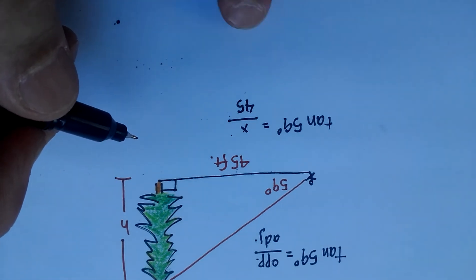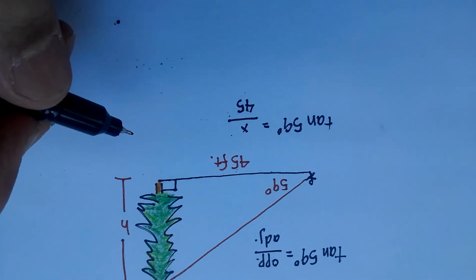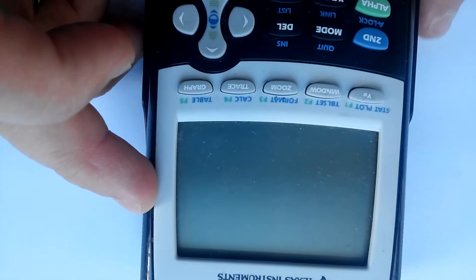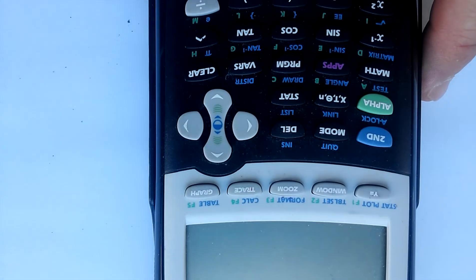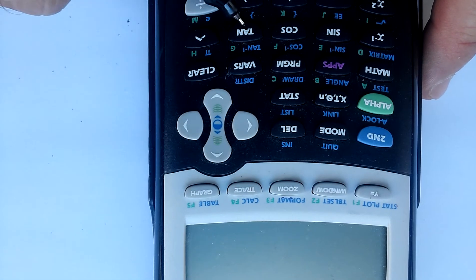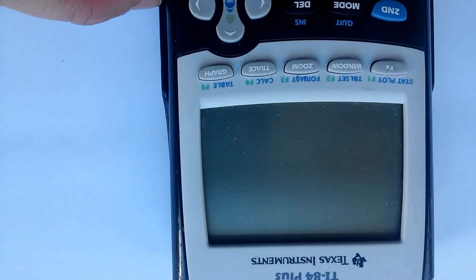Now, we can go to our calculators and look up the tangent of 59 degrees. So take out your calculator, and remember that the tangent button is located right here. So what we're going to do is we're going to go up and enter.